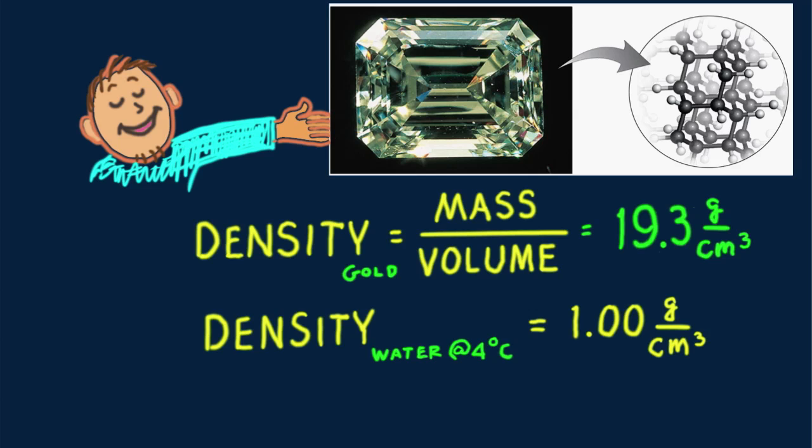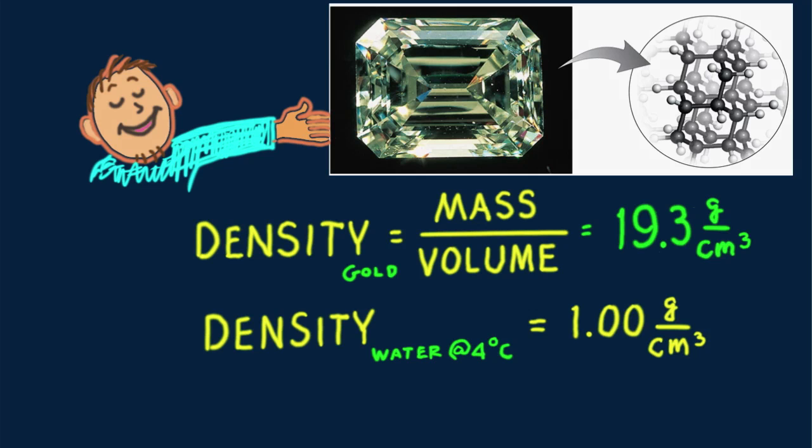Why 4 degrees Celsius? Because the volume of all materials, solids, liquids, or gases change with temperature. Water is densest at 4 degrees Celsius and that is the chosen standard.